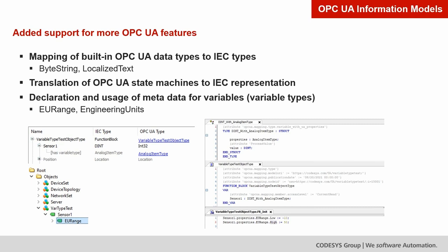With the upcoming release of version 4.2 in April, we extended the possibilities of this feature to support a broader range of information models. One feature is the ability to use built-in OPC UA data types like byte string and localized text — these are very widespread in information models and supporting them is a major step. OPC UA state machines are now supported and can be translated to a corresponding IEC representation in your project, usually consisting of function blocks and methods. The declaration and usage of metadata for variables is another major feature.